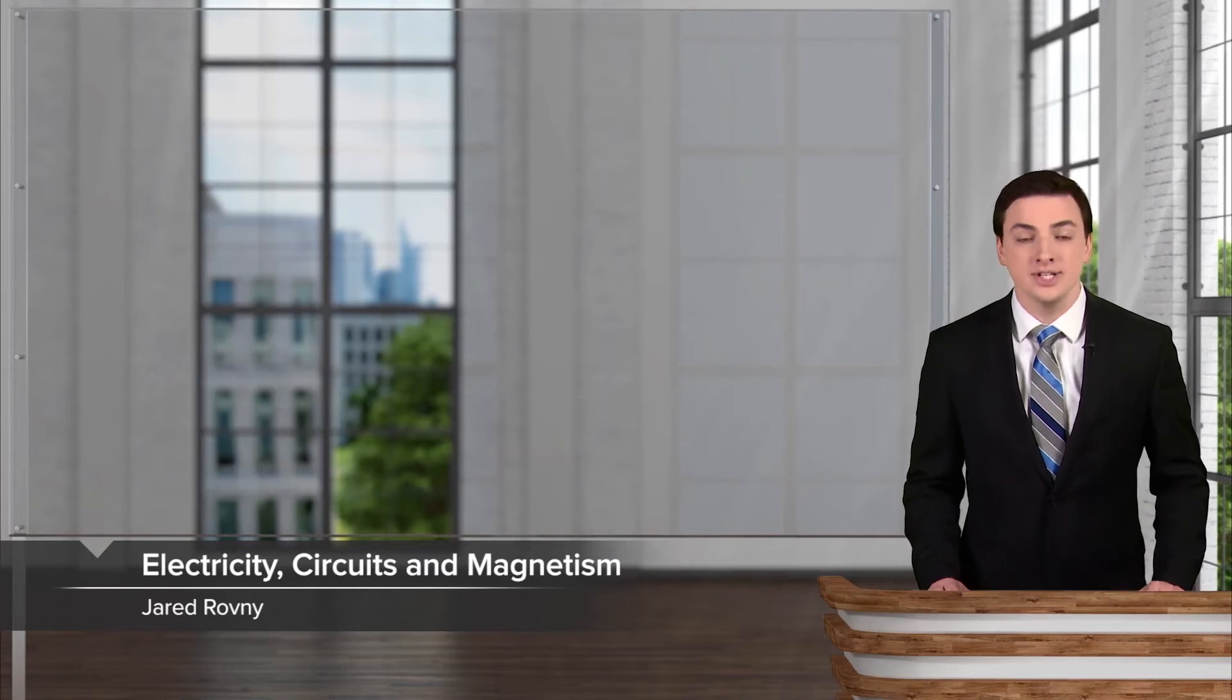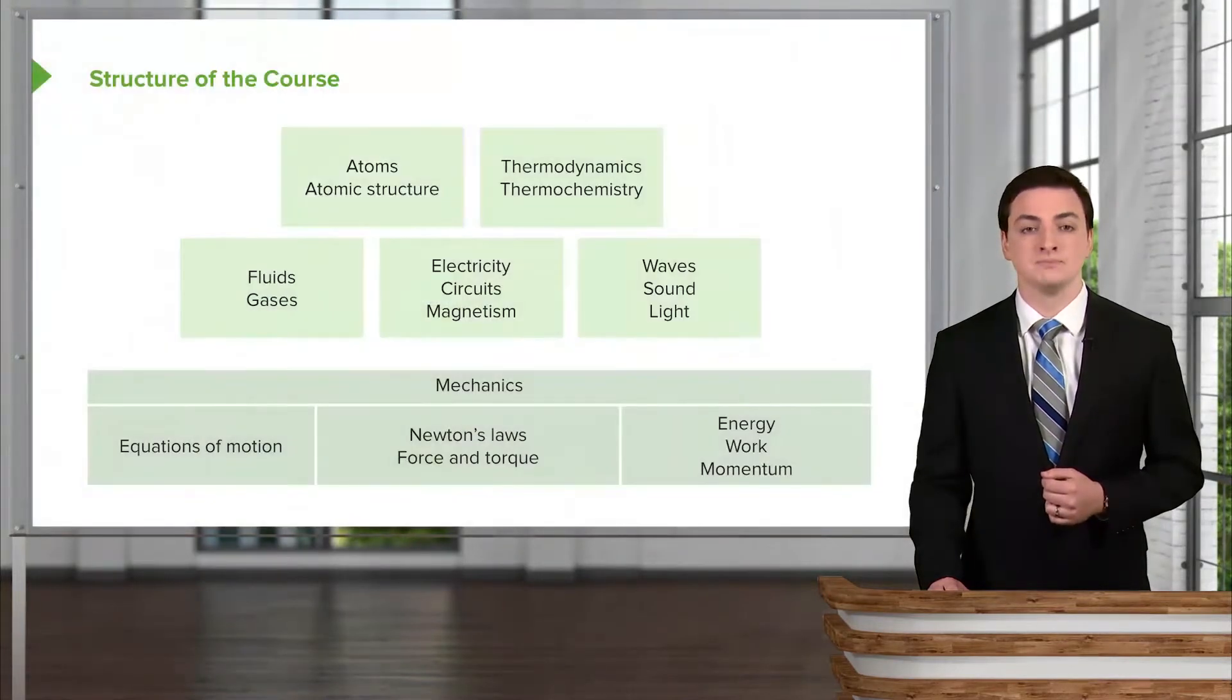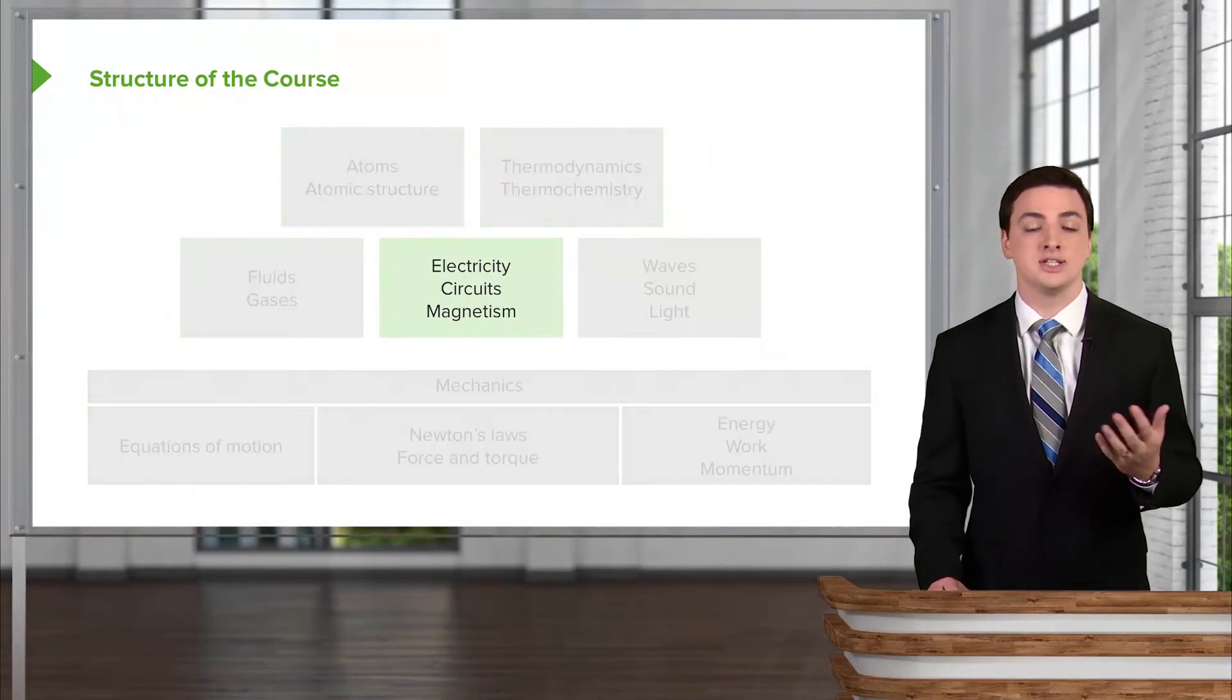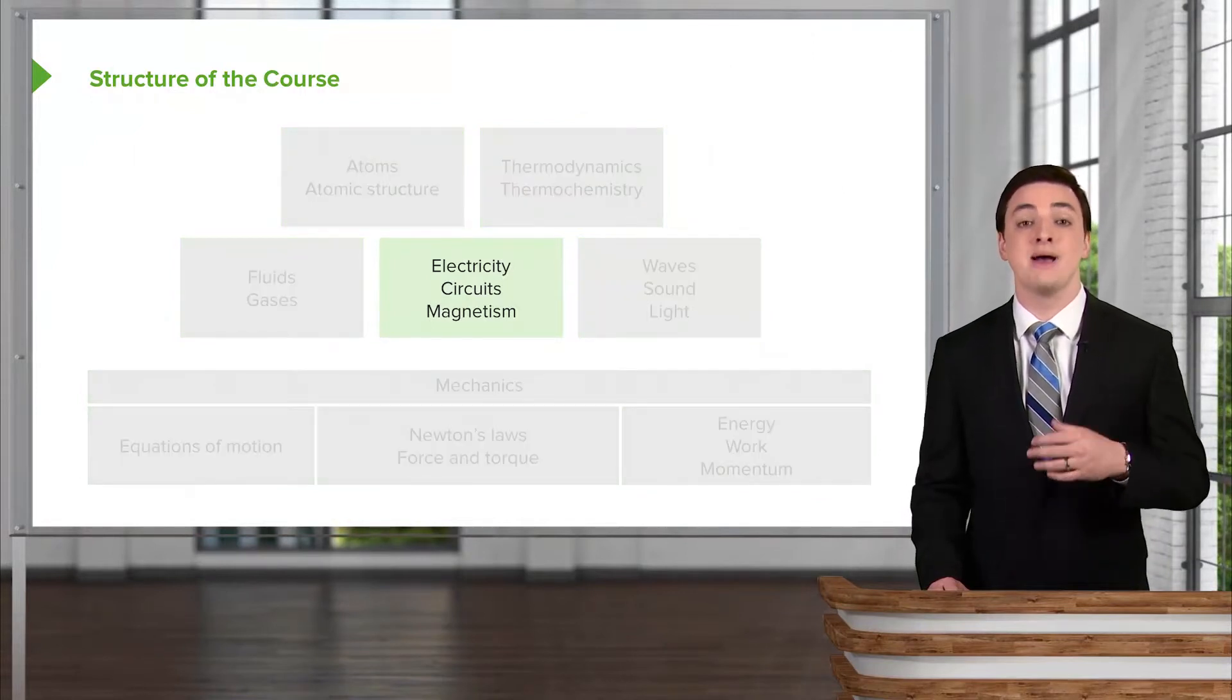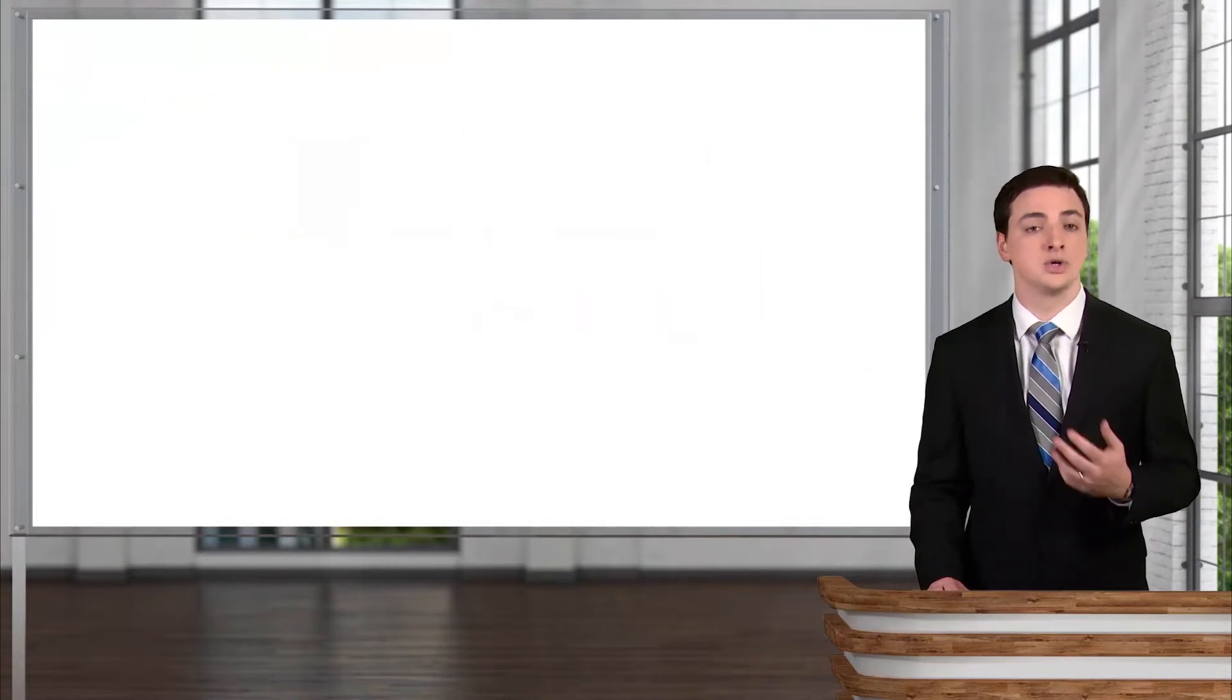Now that we've discussed electricity and how to discuss it quantitatively, as well as some of the variables there, we're ready to talk about circuits. To contextualize this, remember that we've already discussed all of our mechanics and we'll be discussing magnetism after we cover how electricity flows through the circuits we're going to get into.